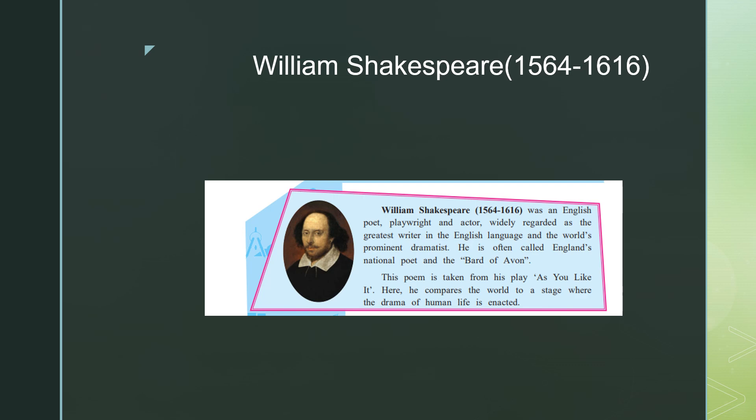William Shakespeare, born in 1564 and died in 1616, was an English poet, playwright, and actor. Widely regarded as the greatest writer in the English language and the world's prominent dramatist, he is often called England's national poet and the Bard of Avon. This poem is taken from his play As You Like It, where he compares the world to a stage where the drama of human life is enacted.